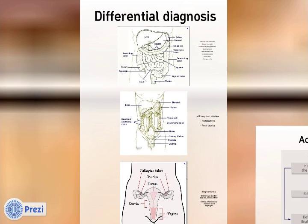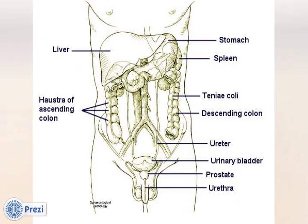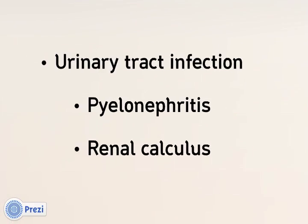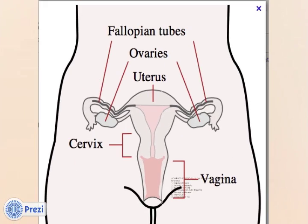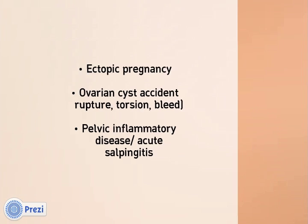Let's consider the differential diagnosis, which can be categorised into bowel-related pathology, renal tract pathology, and gynaecological pathology. The most dangerous of these is ectopic pregnancy, which should always be excluded. Also consider medical conditions which mimic appendicitis, including psoas abscess and possibly diabetic ketoacidosis.